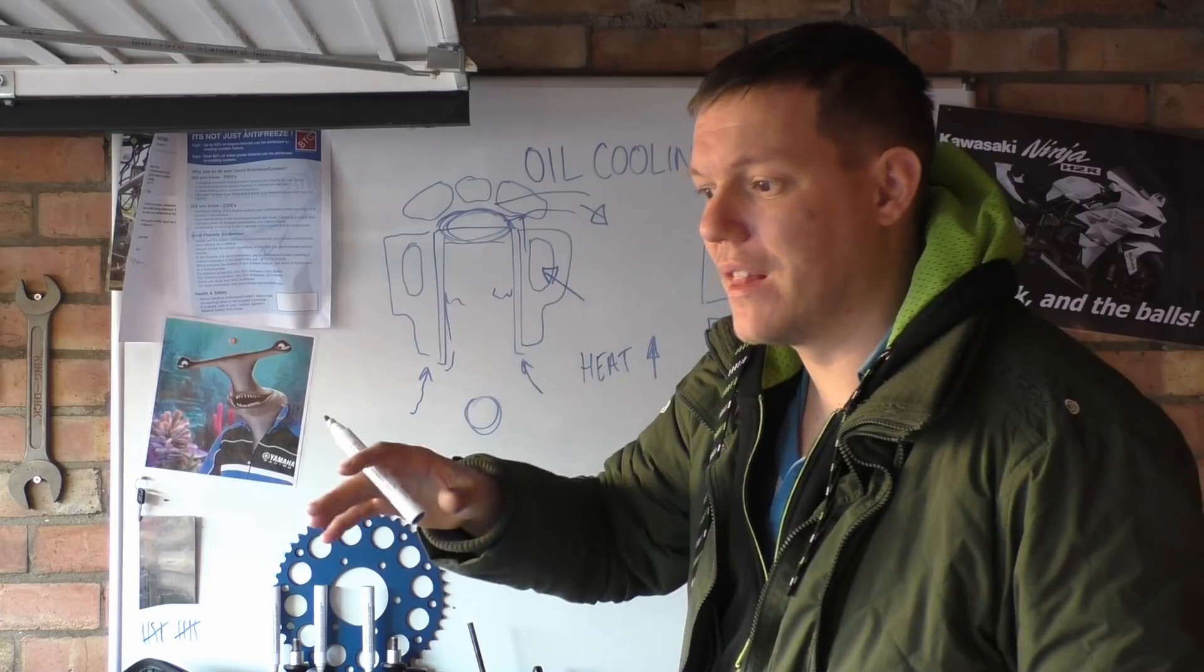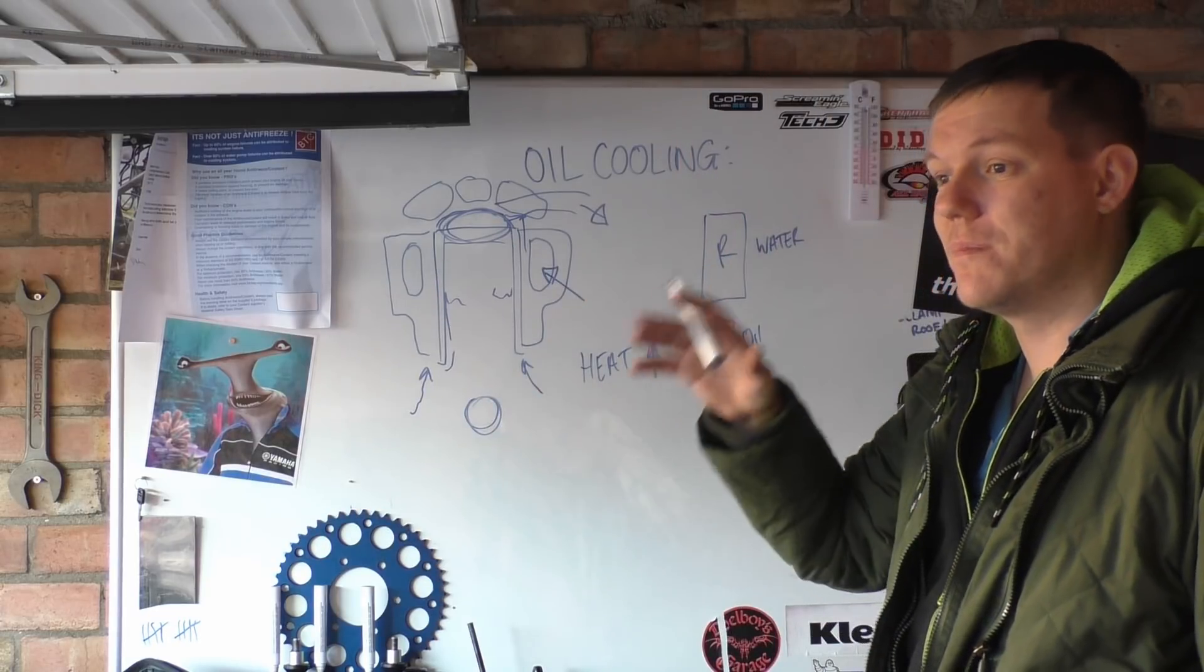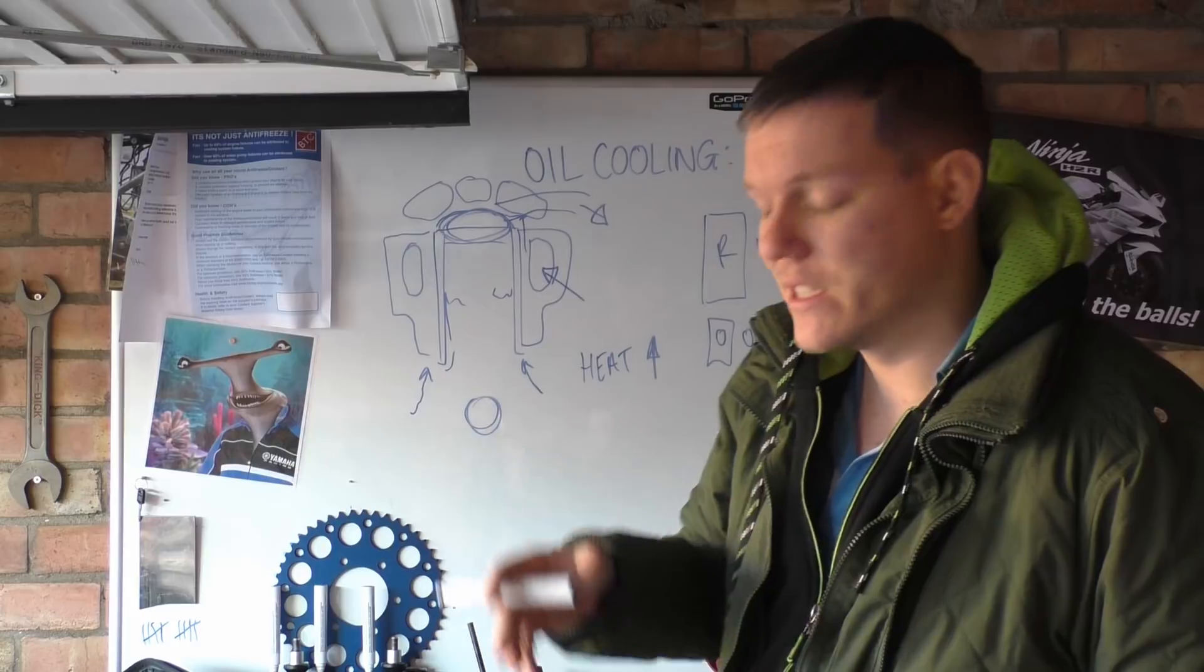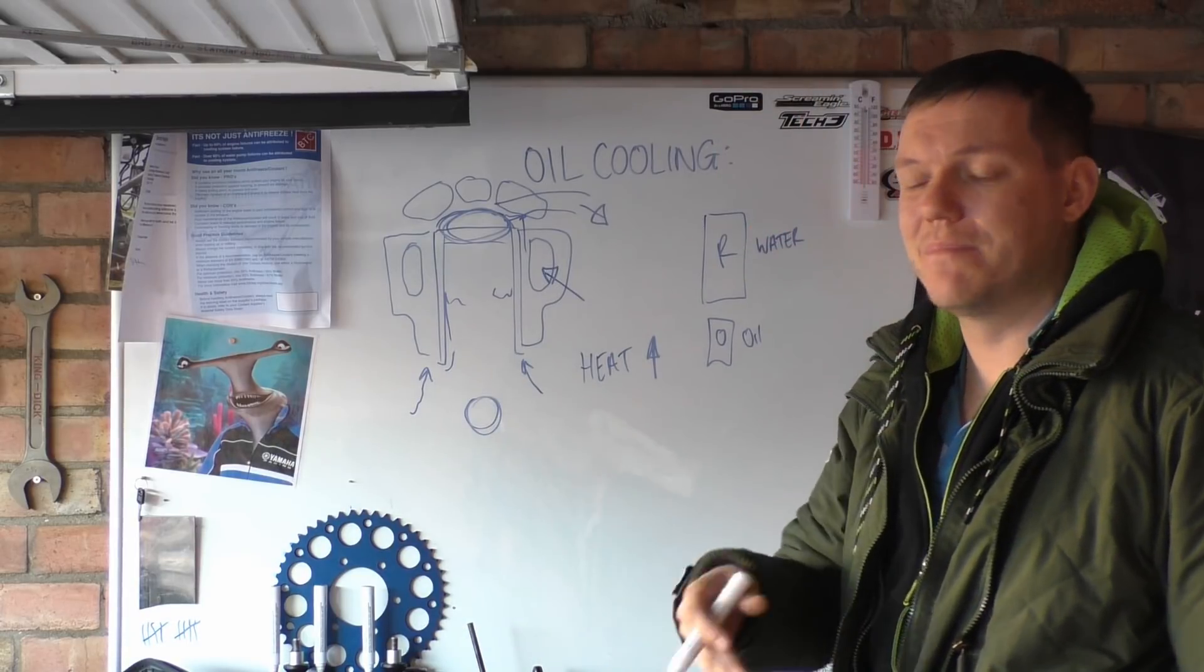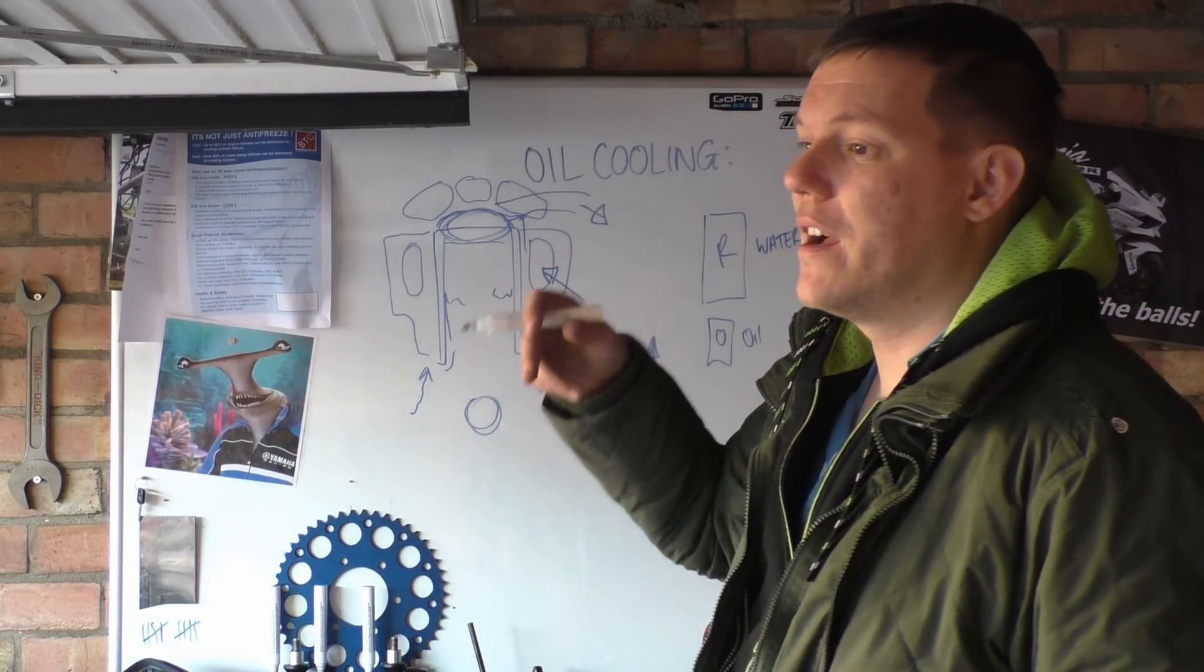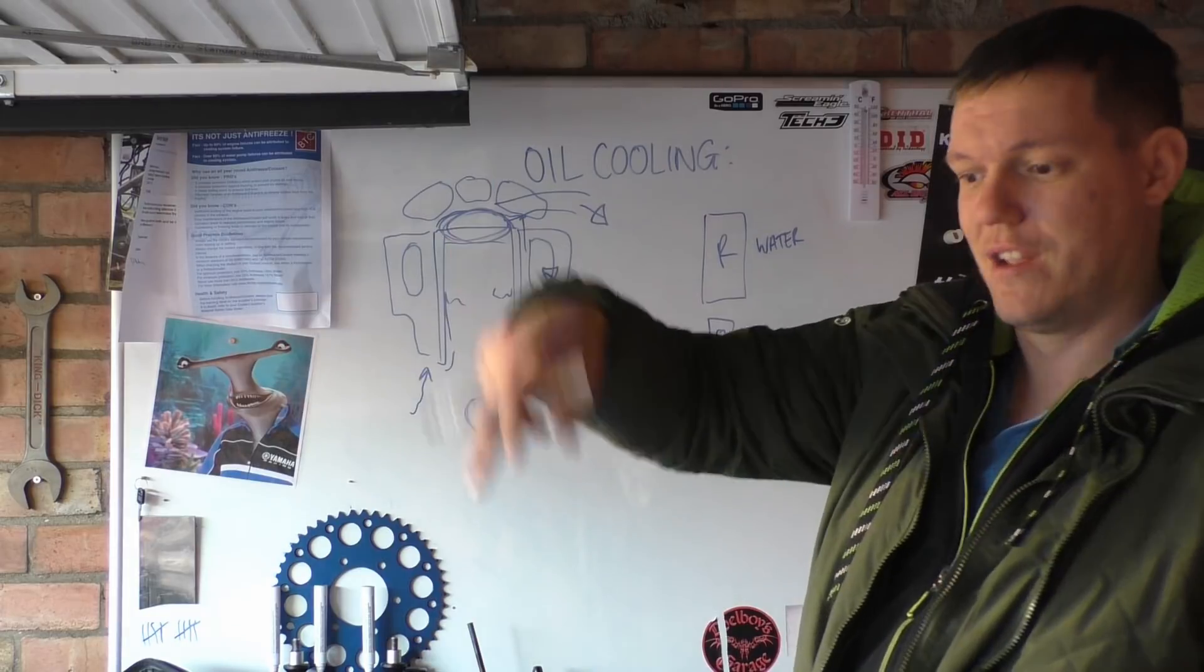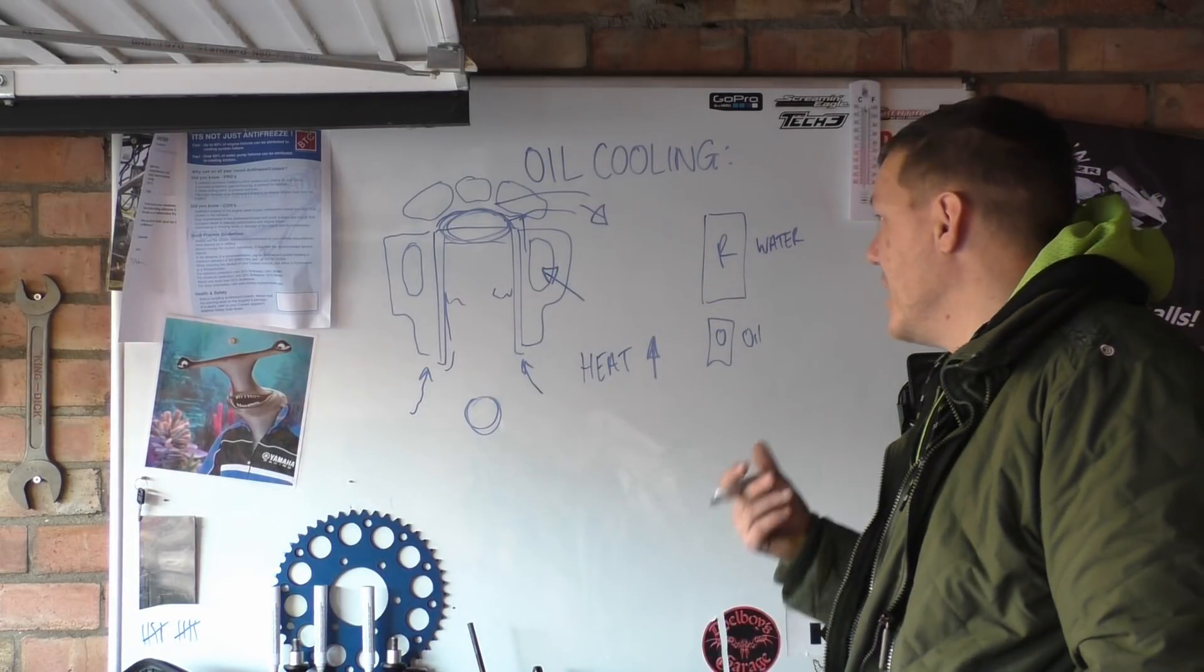Then the lines that you have for your oil system have to be oil pressure rated lines. Because basically you need to maintain the pressure so that the pump pressure will end up in your crank bearings and all the rest of it.